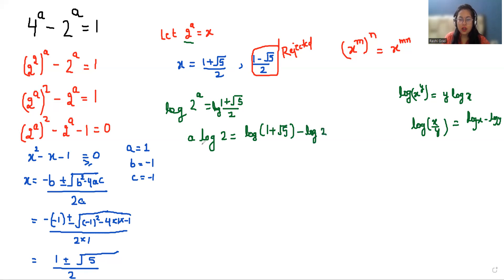Now I'm going to divide both sides by log(2). So from the left-hand side we get a equals (log(1 + √5) - log(2)) / log(2).